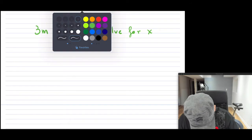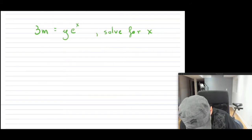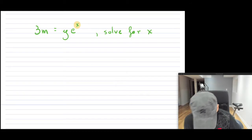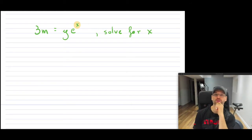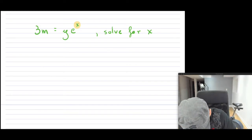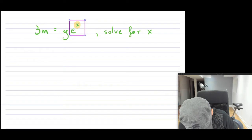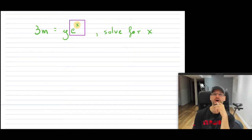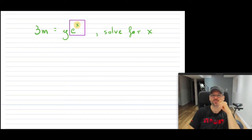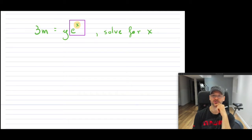Let's give this one a try. Our exponent is right here. When you know that the unknown you're solving for is in the exponent, your first step is to isolate the base with the exponent. So this is our base with the exponent — it is e to the exponent x. We're going to get rid of everything else and just leave e to the exponent x, so that we can use logs to solve for this.